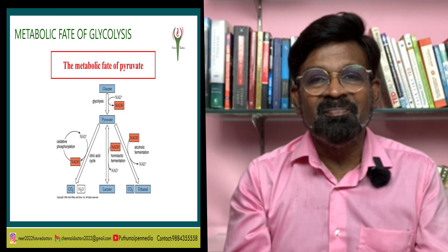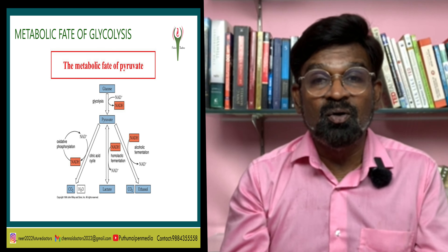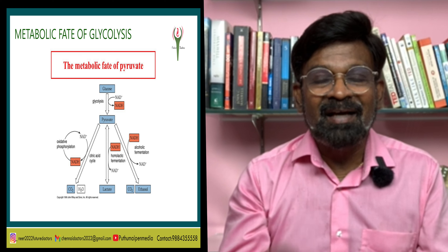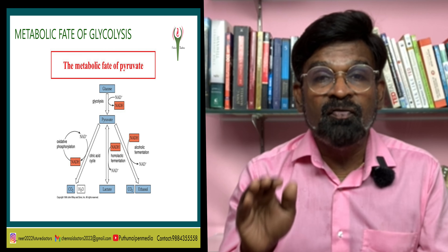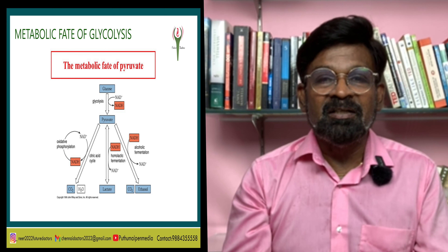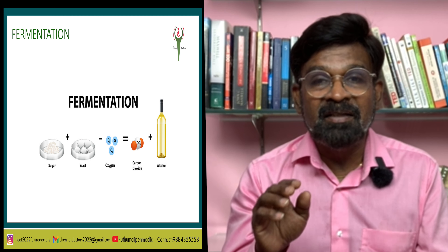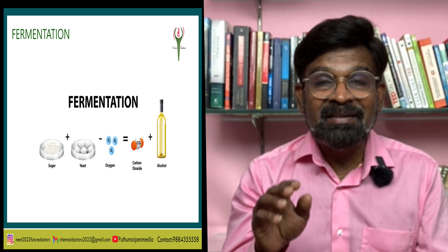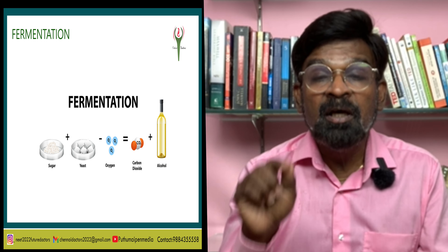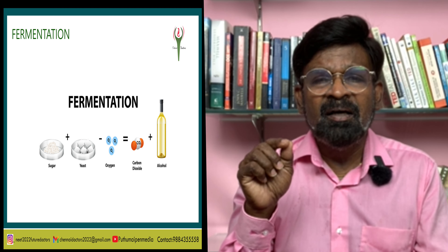The fate of pyruvic acid depends upon the availability of oxygen in the cell. In the presence of oxygen, pyruvic acid enters the mitochondrion and undergoes complete oxidation to carbon dioxide and water. In the absence of oxygen, pyruvic acid will undergo anaerobic respiration. Various microorganisms, bacteria, animals, and plants are known to catalyze pyruvic acid into various organic compounds depending on the specific enzymes they possess.